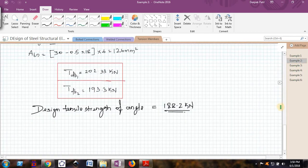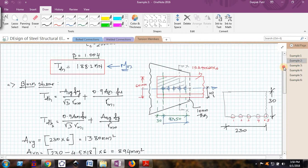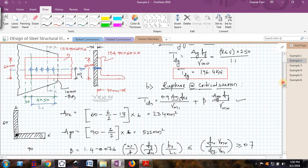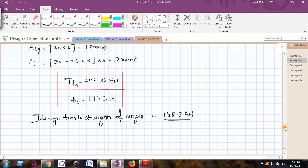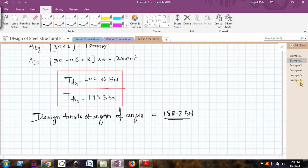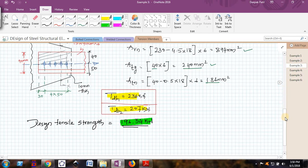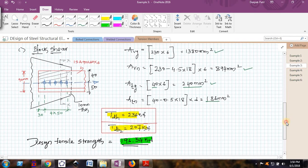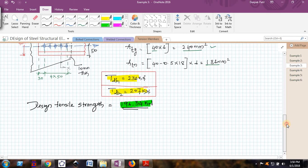What conclusion we can make from this is, if you see example 2 where we connected a 60 mm leg to the gusset plate (the shorter leg), we were getting design tensile strength of 188.2, but when you connect a 90 mm leg (the long leg) to the gusset plate, I am getting 196. Whenever you connect a long leg to the gusset plate, we get more design tensile strength when you use the same angle, same number of bolts, same bolt diameter, same gusset plate, same thickness gusset plate.